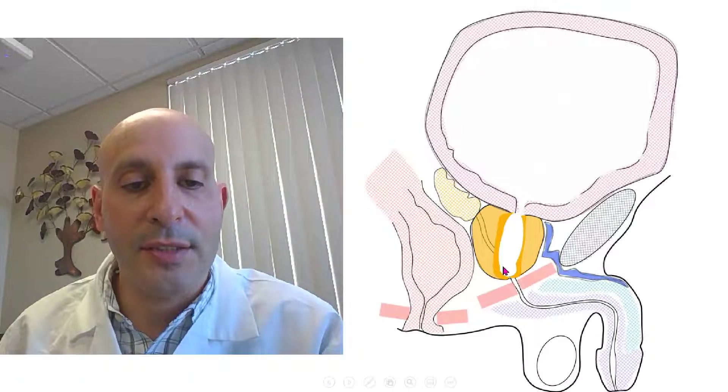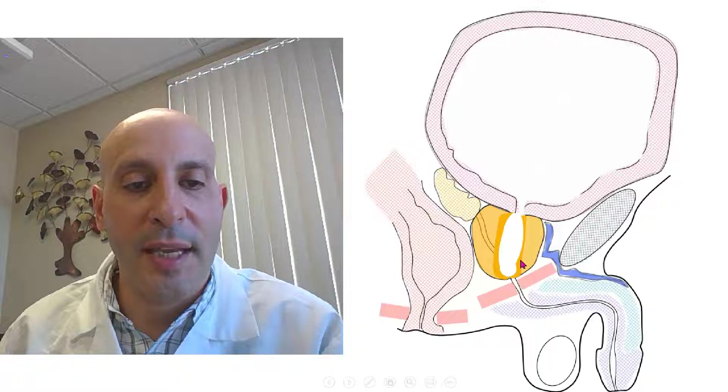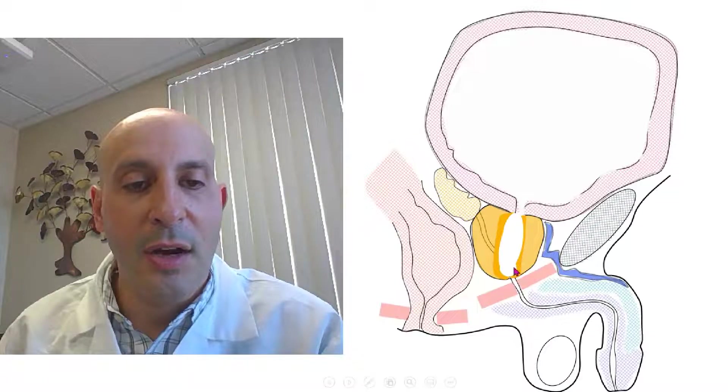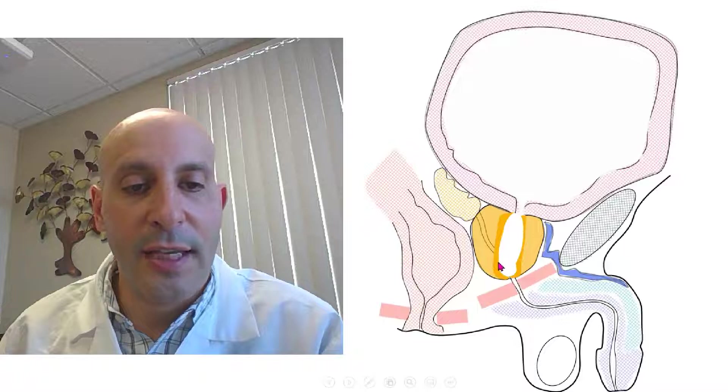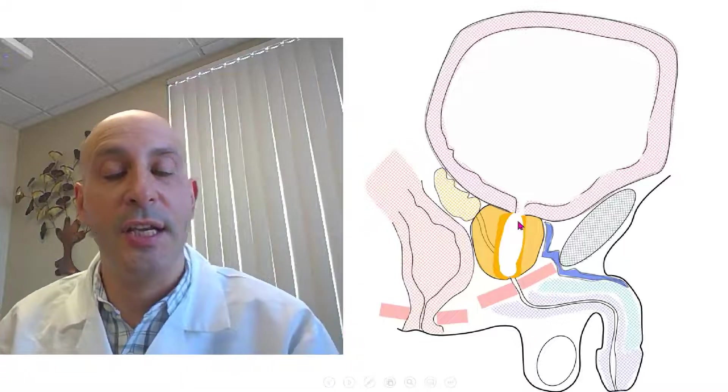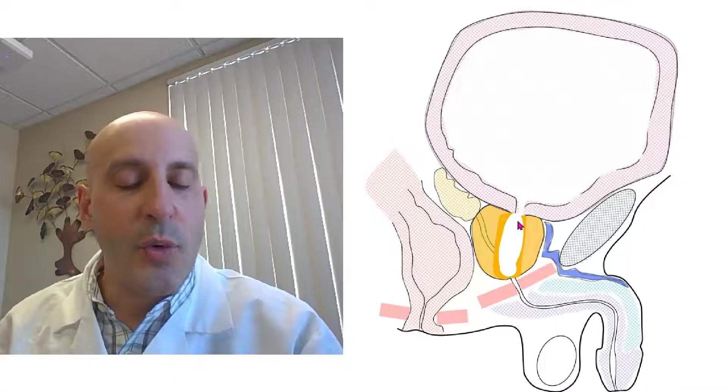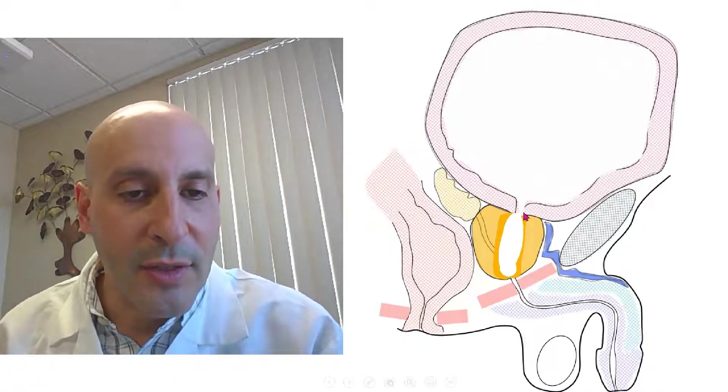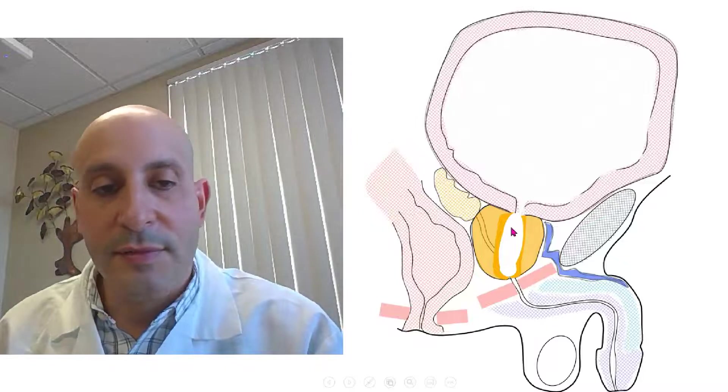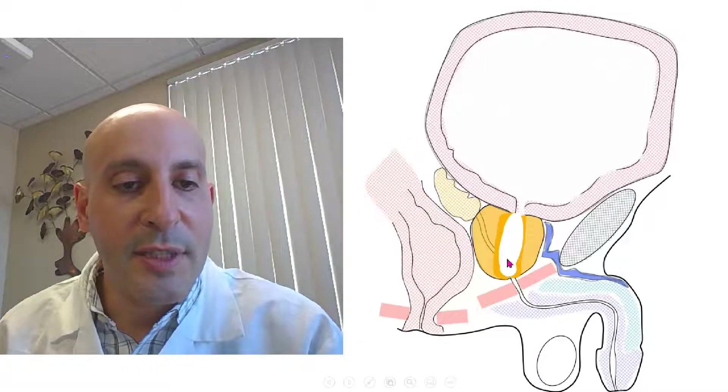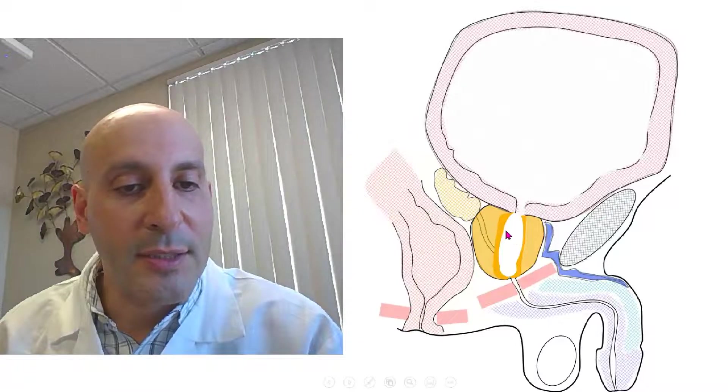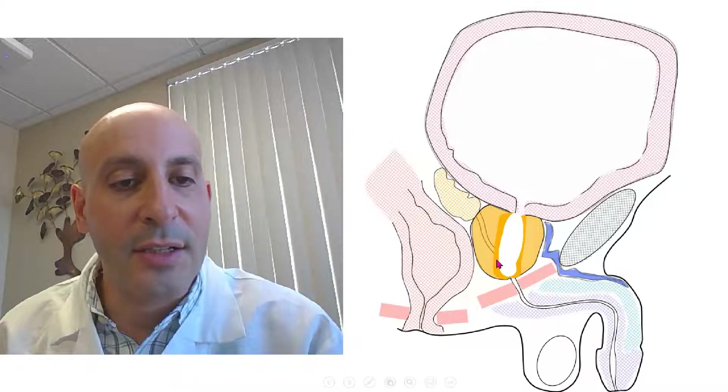Most of the procedures for BPH are designed to carve out a wider opening in this channel, either using electrical energy or lasers. There's more than 20 different procedures that exist to try and open up the prostate channel. Urolift is another example where instead of removing tissue, the prostate is propped open using some anchors.